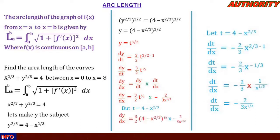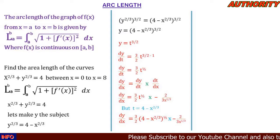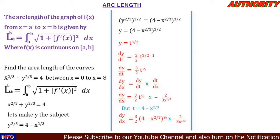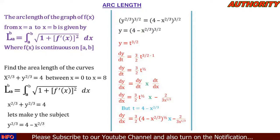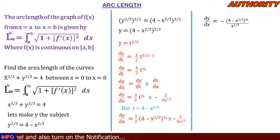The factors 3/2 and 2/3 cancel each other, so: dy/dx = -(4 - x^(2/3))^(1/2) / x^(1/3). This is our f'(x).